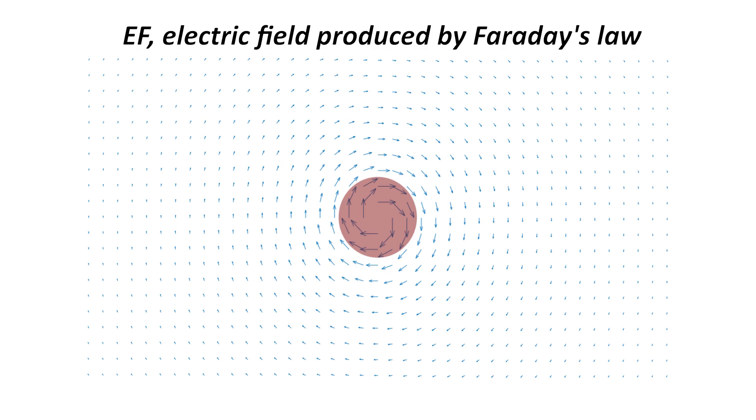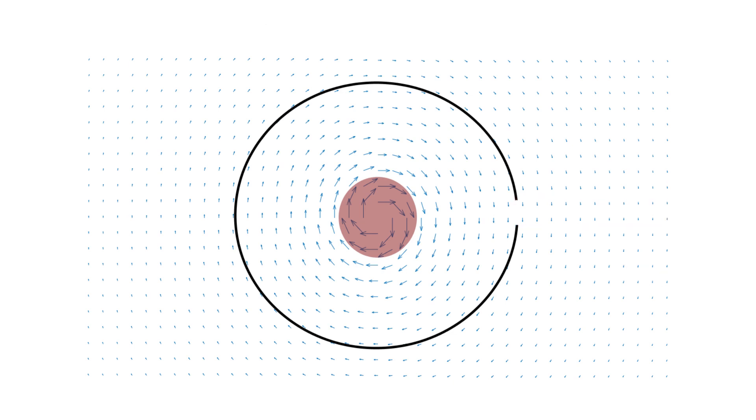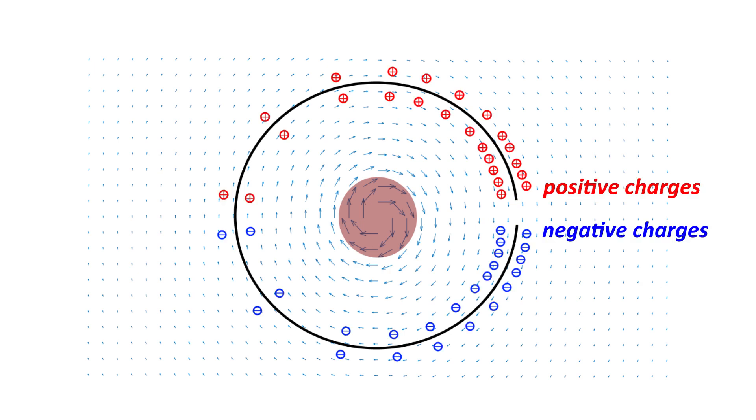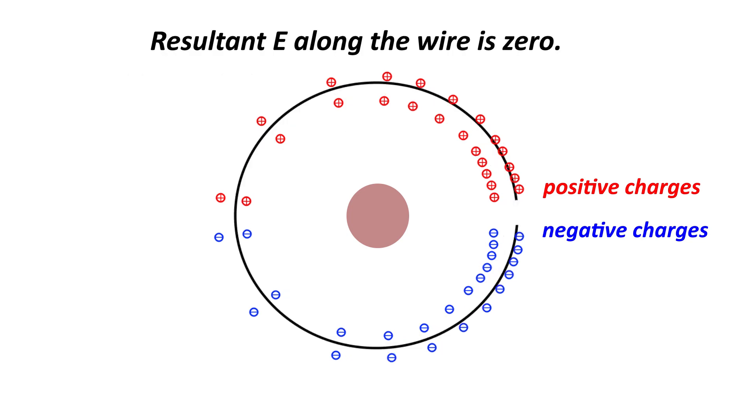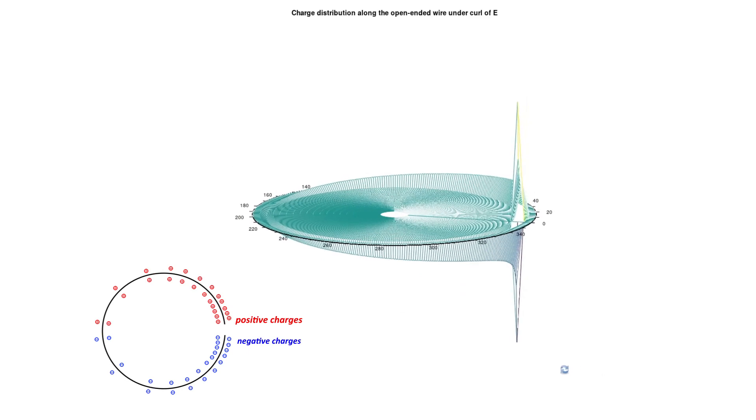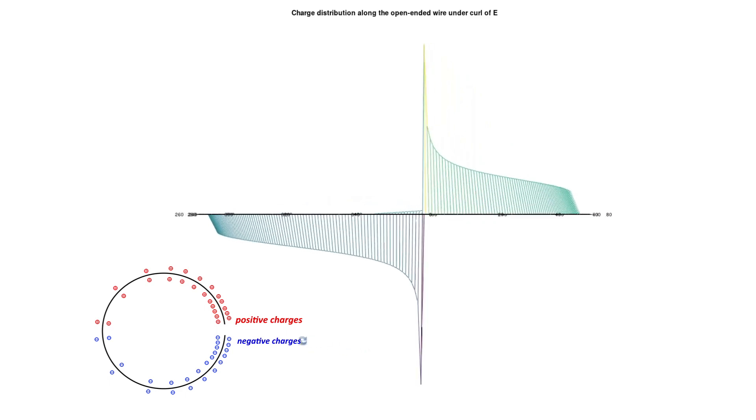To prove that such circular E field actually exists, we can put a conducting wire to capture the electric field and fill it into a voltmeter for measurement. Along the wire, the electrons under the influence of the electric field move towards one terminal, and left with positive charges on the other terminal. But when the charges split up, they are pulled back by their own Coulomb force, and set up a reverse electric field in the wire. The reverse E field cancels the forward E field, and the resultant E field along the wire is zero. This is the charge distribution obtained from numerical calculation using the method of moment, and we can see maximum charge accumulation at the terminals.